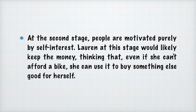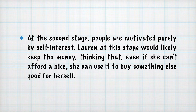At the second stage, people are motivated purely by self-interest. For example, Lauren at this stage would likely keep the money, thinking that even if she can't afford a bike, she can use it to buy something else good for herself.